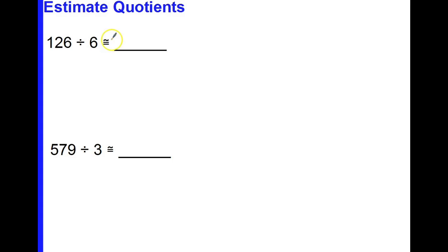This symbol here means approximately equal to, and that's what we want to find. So what I'm going to do first is pay attention to my first two digits — my first digits are 12, and my divisor is 6. My dividend 126 shows the first two digits of 12, and that's what I want to focus on.